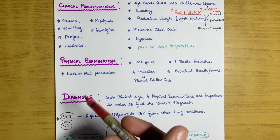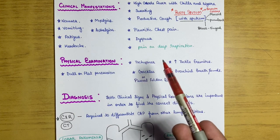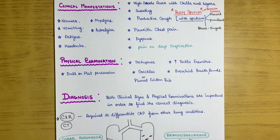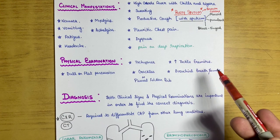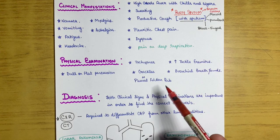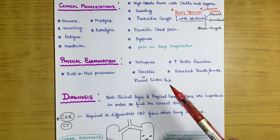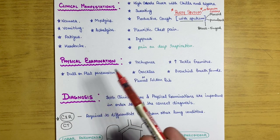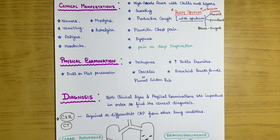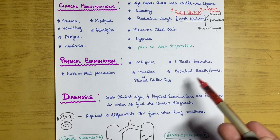On physical examination, the patient will have tachypnea. Tactile fremitus is increased. Crackles or pleural friction rub will be heard on auscultation with a stethoscope. Dull or flat percussion is present due to alveoli filled with exudate. Bronchial breath sounds are also heard.